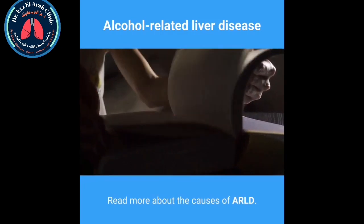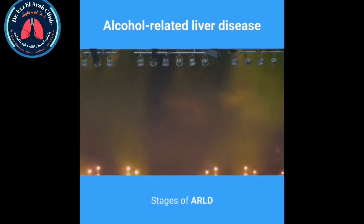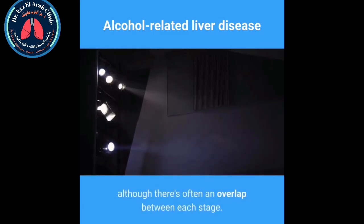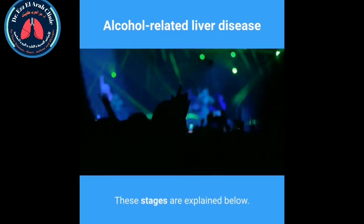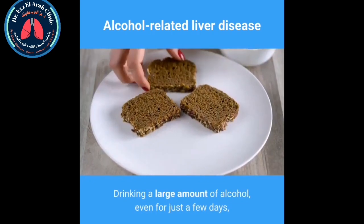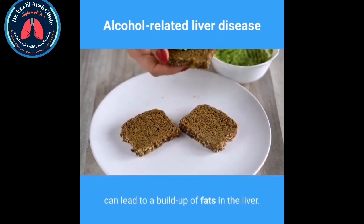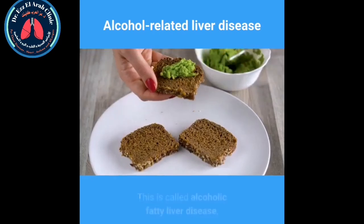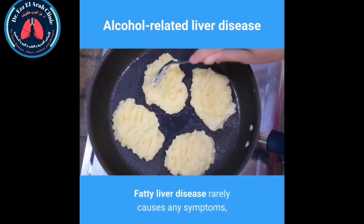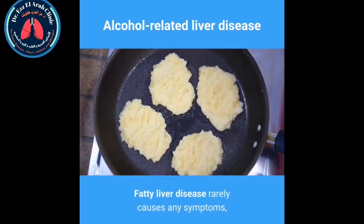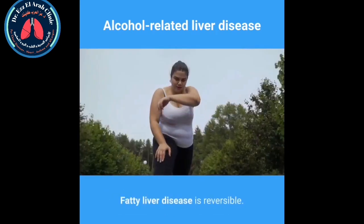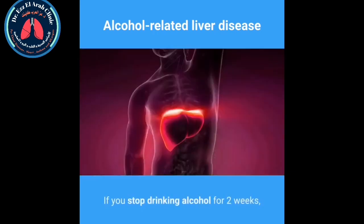There are three main stages of ARLD, although there is often an overlap between each stage. The first is alcoholic fatty liver disease. Drinking a large amount of alcohol, even for just a few days, can lead to a buildup of fats in the liver. Fatty liver disease rarely causes any symptoms, but it's an important warning sign that you're drinking at a harmful level. It is reversible if you stop drinking alcohol — within two weeks your liver should return to normal.